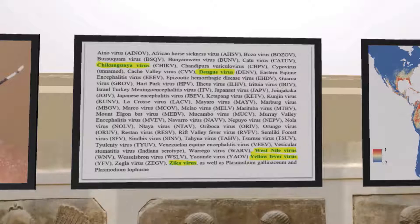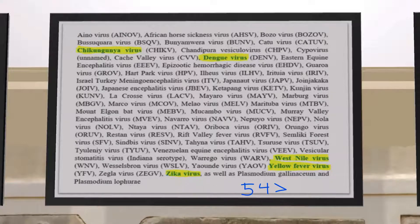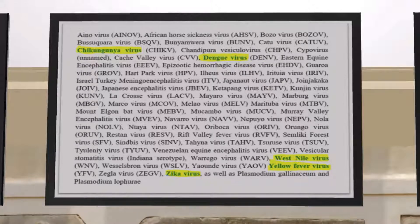If we take a look at this screen, we see the dozens of pathogens which the Aedes mosquito can transmit — over 54 pathogens, most of them being viruses. But these last two are actually plasmodium species. The highlighted ones are the most common and the most tested ones.